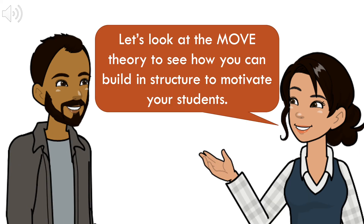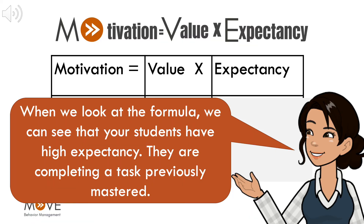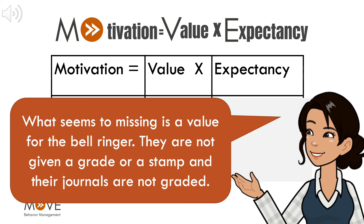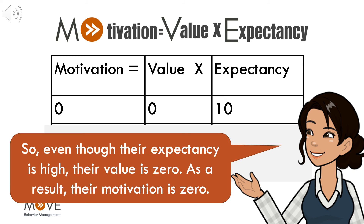Let's look at the MOVE theory to see how you can build in structure to motivate your students. When we look at the formula, we can see that your students have high expectancy — they are completing a task previously mastered. What seems to be missing is a value for the bell ringer. They are not given a grade or a stamp and their journals are not graded. So, even though their expectancy is high, their value is zero. As a result, their motivation is zero.